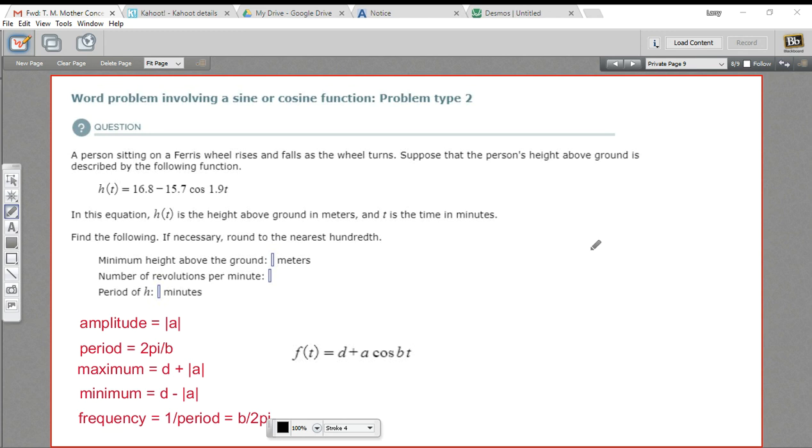What this whole function represents is someone's height above the ground when they're riding a Ferris wheel. You can imagine we've got this big Ferris wheel, person's in a little car. As the Ferris wheel turns, they might get closer to the ground, then they start to get higher up above the ground, then they go closer to the ground again, and so on around the circle.